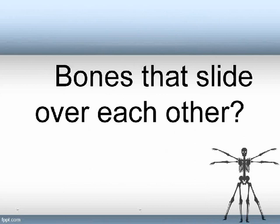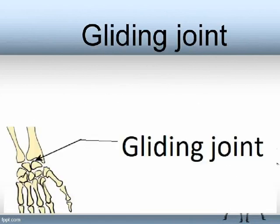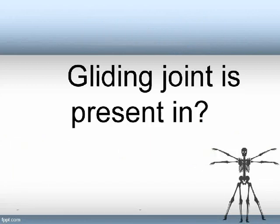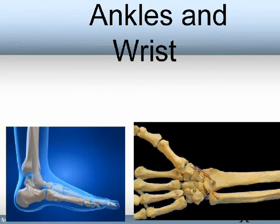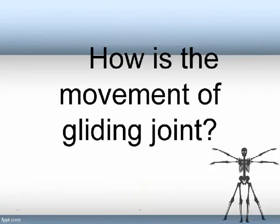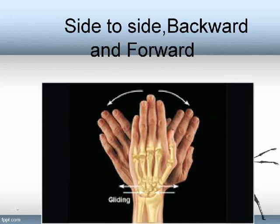Bones that slide over each other form a gliding joint. Gliding joint is present in ankles and wrist. How is the movement of a gliding joint? Side to side, backward and forward.